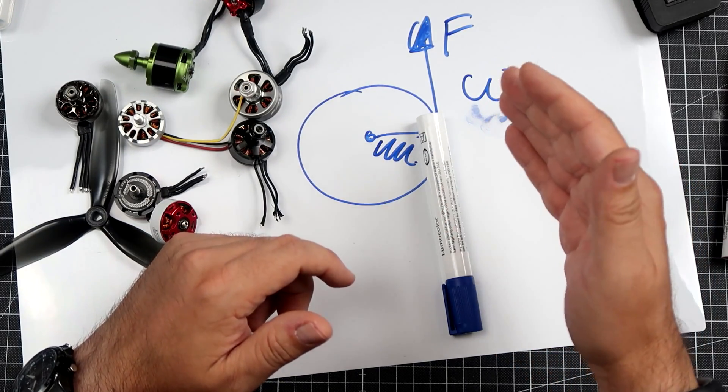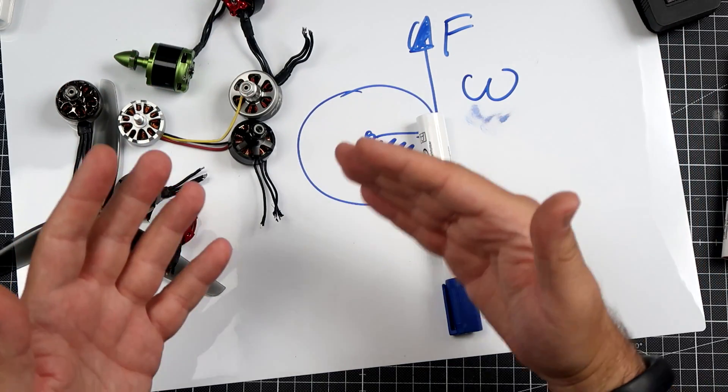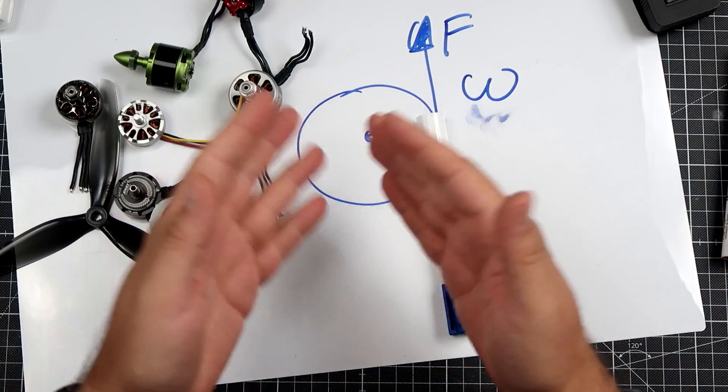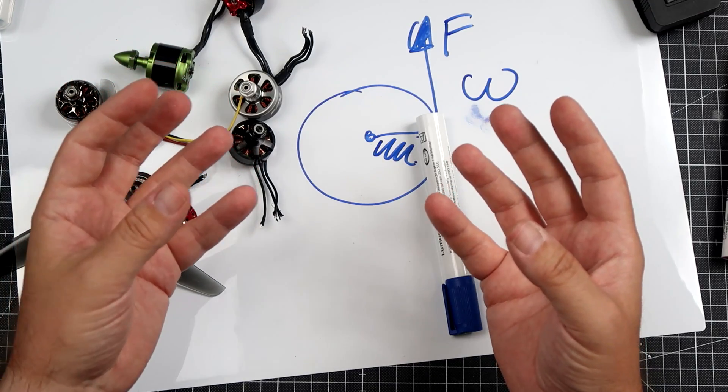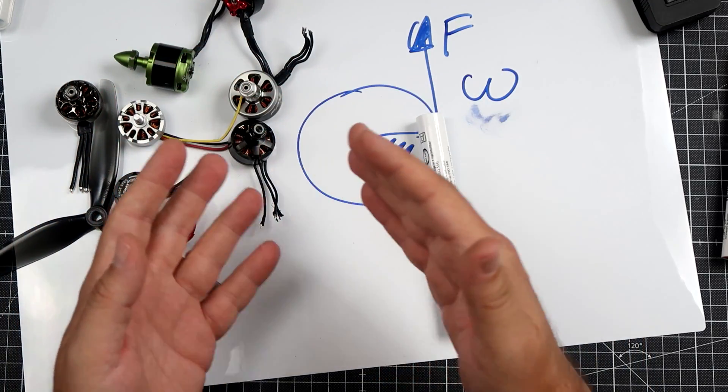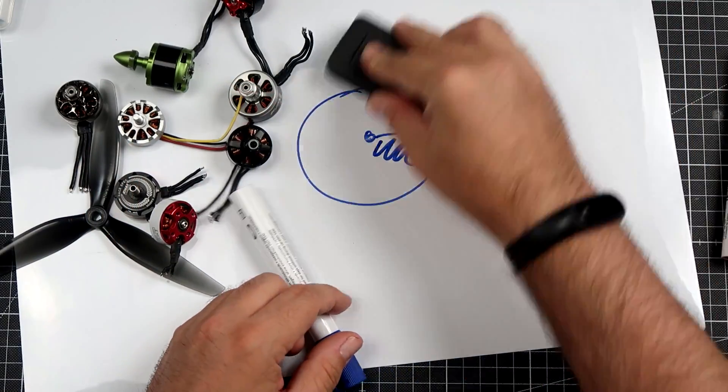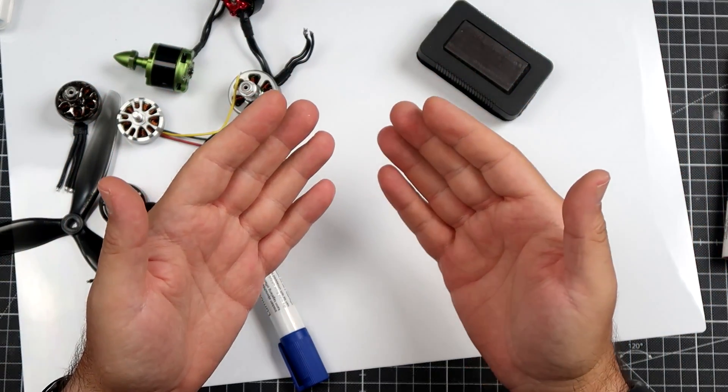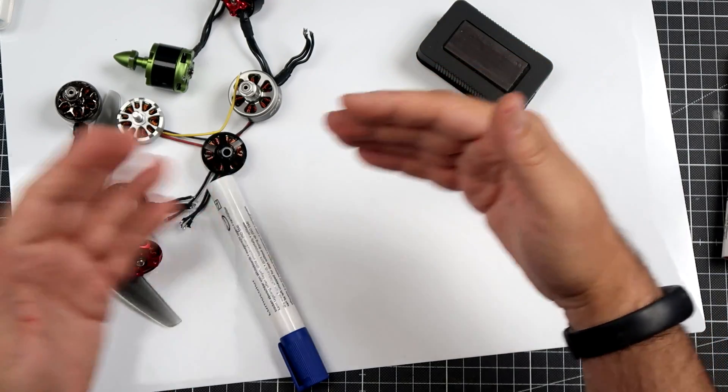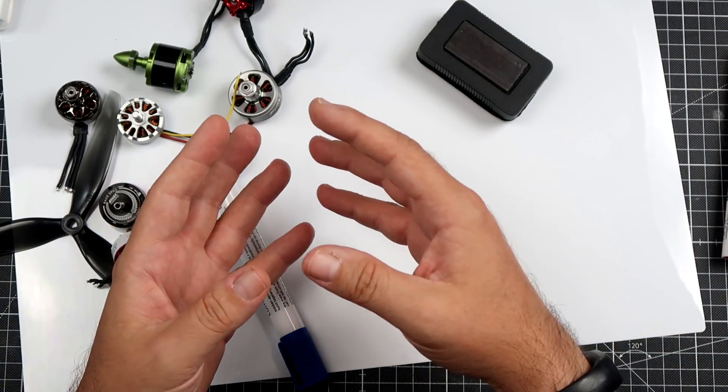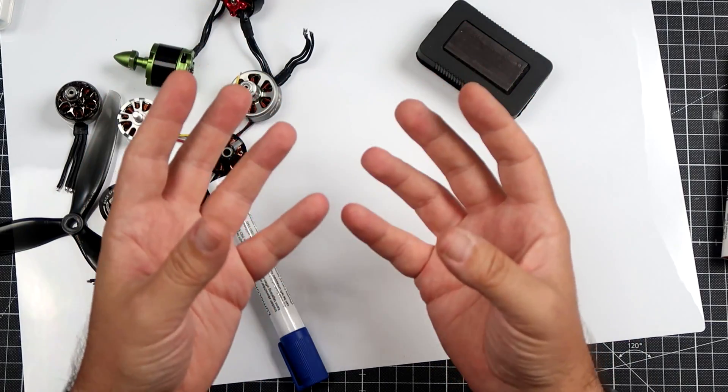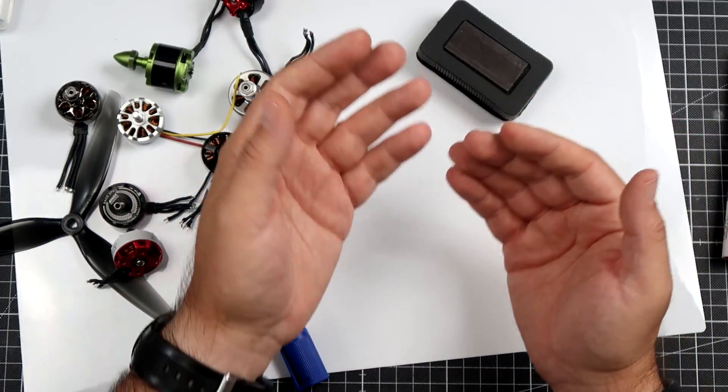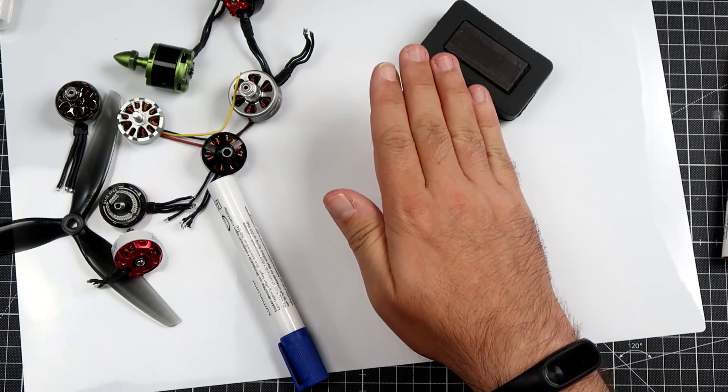Torque times the angular speed in radians per second means power. The same torque, the faster we are rotating, the more power we have. Power is the multiplication of the angular speed of the motor and propeller and the torque that is currently delivered.